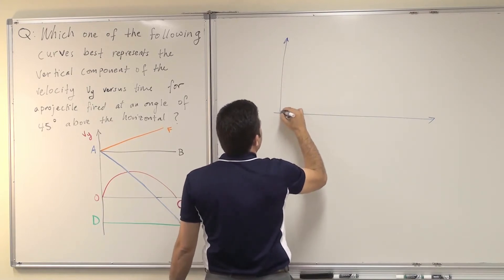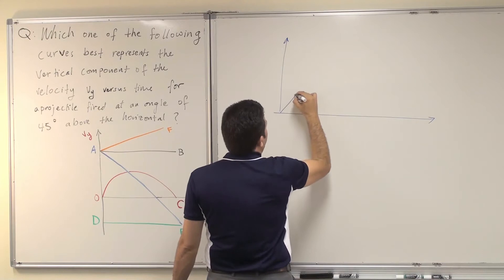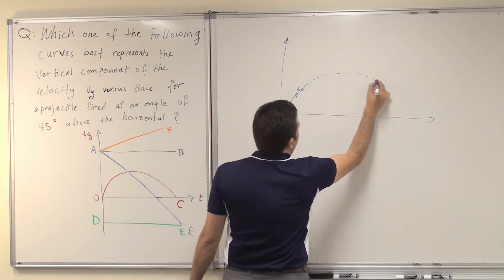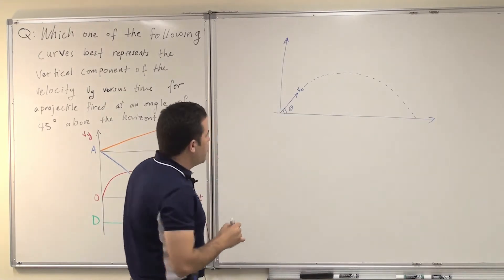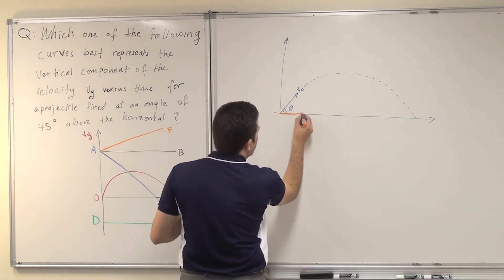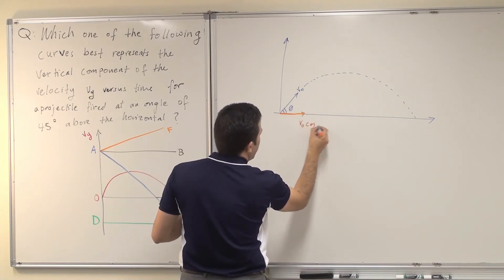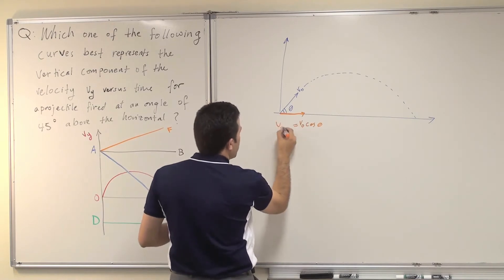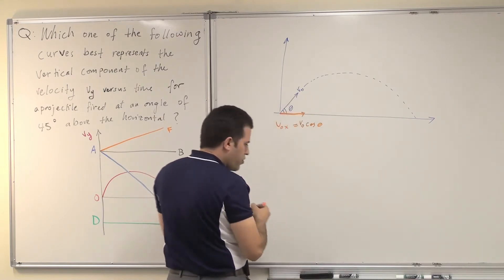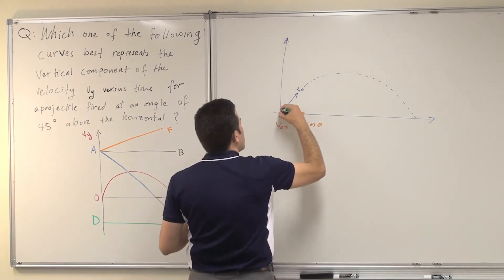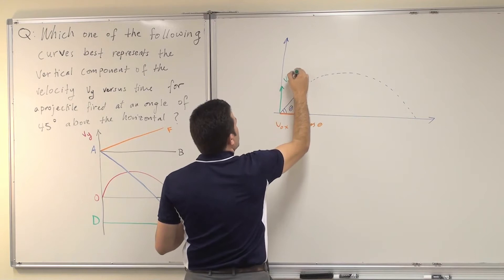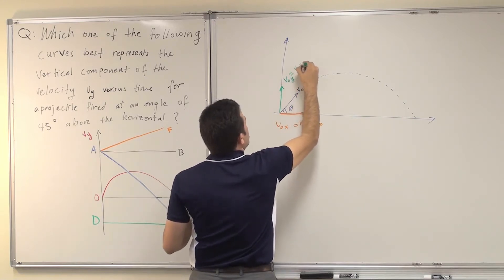If I have a projectile fired with a velocity V0 at angle theta, then this projectile will follow the typical parabolic path. Initially it will have two components: one is the horizontal component, which is V0 cosine of the angle of projection — this will be called V0x, the initial horizontal component. And there is another component, the vertical component that the question is asking about, given as V0y, which equals V0 sine theta.